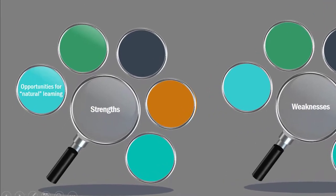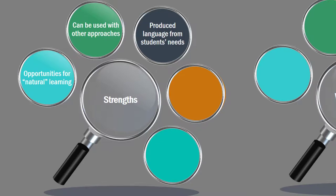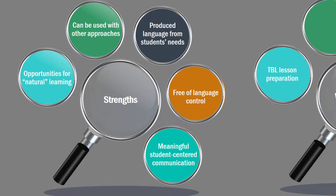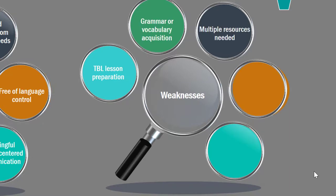Designing a complete syllabus of mathematical tasks for English learners has strengths and weaknesses. Its strengths include: it offers opportunities for natural learning inside the classroom; it can be used alongside a more traditional approach; language produced arises from students' needs; students are free of language control; and it is student-centered, allowing for meaningful communication. Weaknesses include: preparation of task-based learning lessons is very demanding; there is often little acquisition of new grammar or vocabulary; it requires resources beyond the textbook; not all students are motivated by the tasks; and it is not really suitable for beginners.